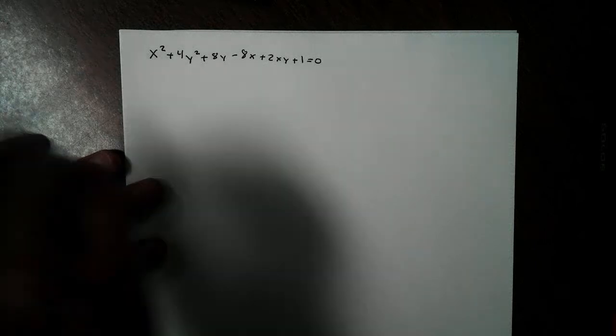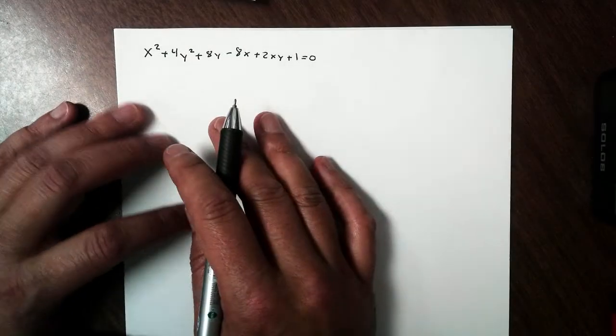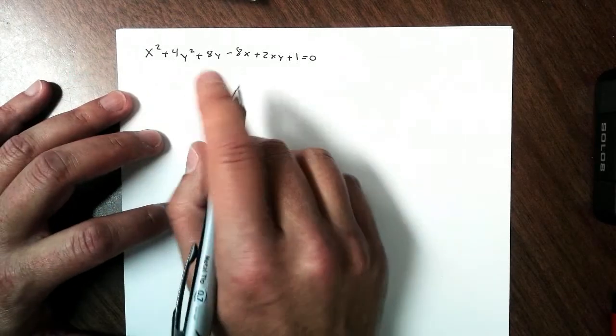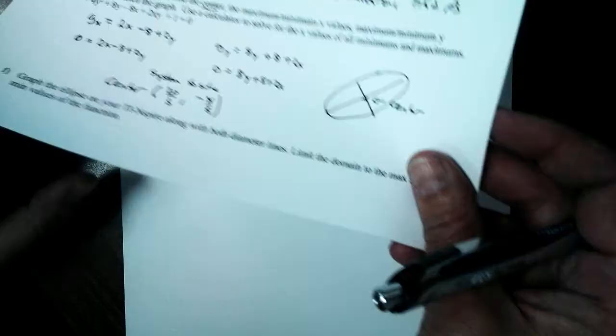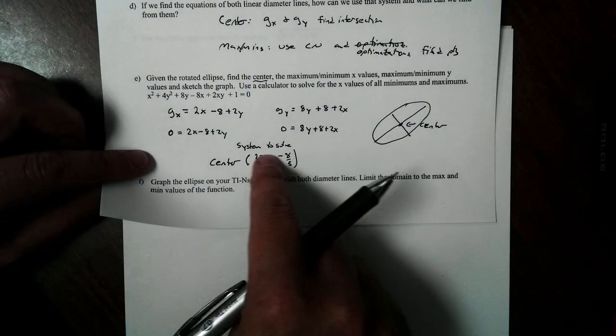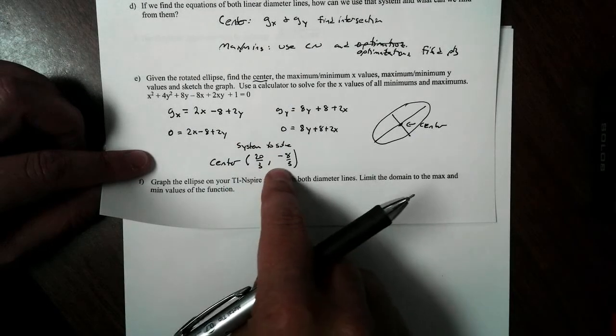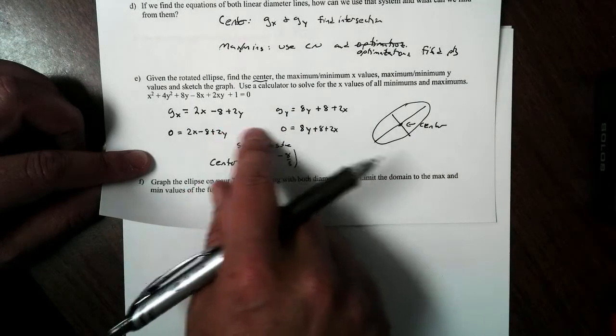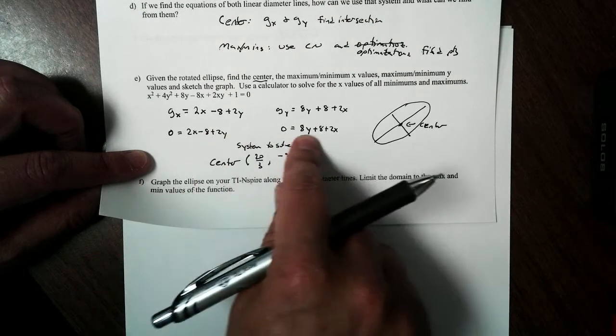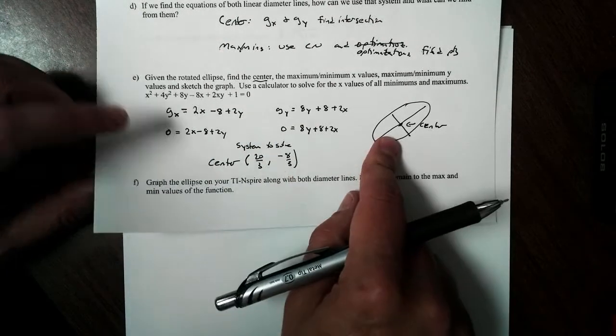Hi, welcome back. We're going to continue our discussion about conic sections. In the last section, we found the system to solve where the center was, and we had to use our partials and look at the equations of their diameters and solve this to get the center.